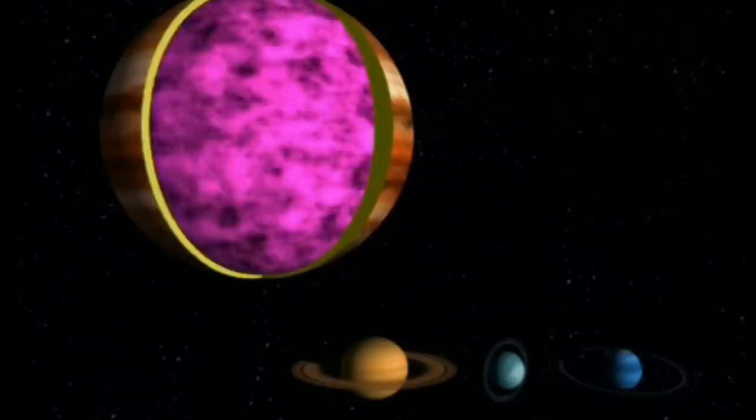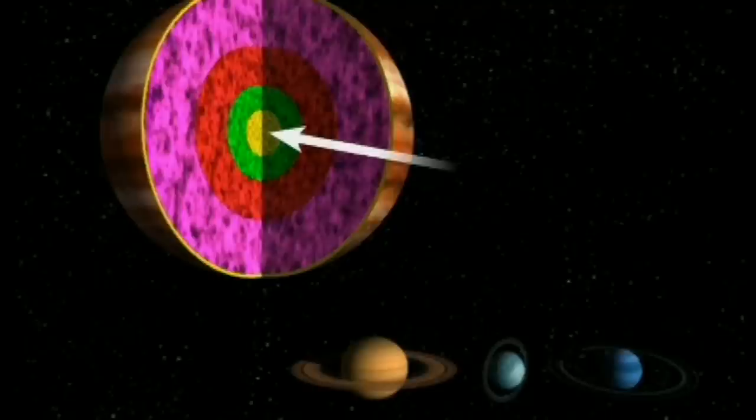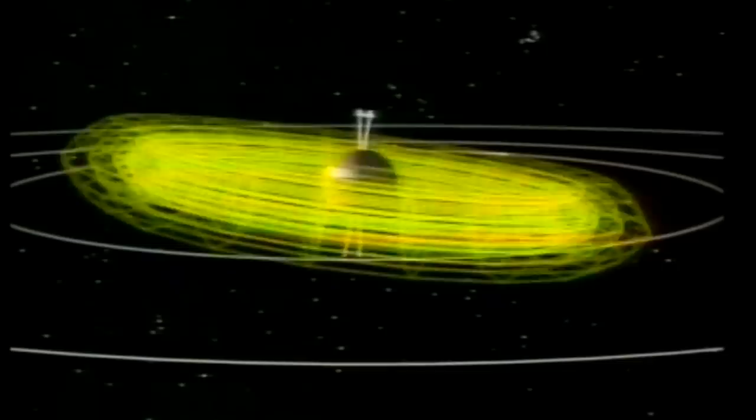Au cœur de Jupiter, de l'hydrogène et de l'hélium, puis de l'hydrogène liquide, de l'hydrogène métallique et enfin un noyau dur. C'est cet hydrogène métallique liquide qui produit le champ magnétique de Jupiter.